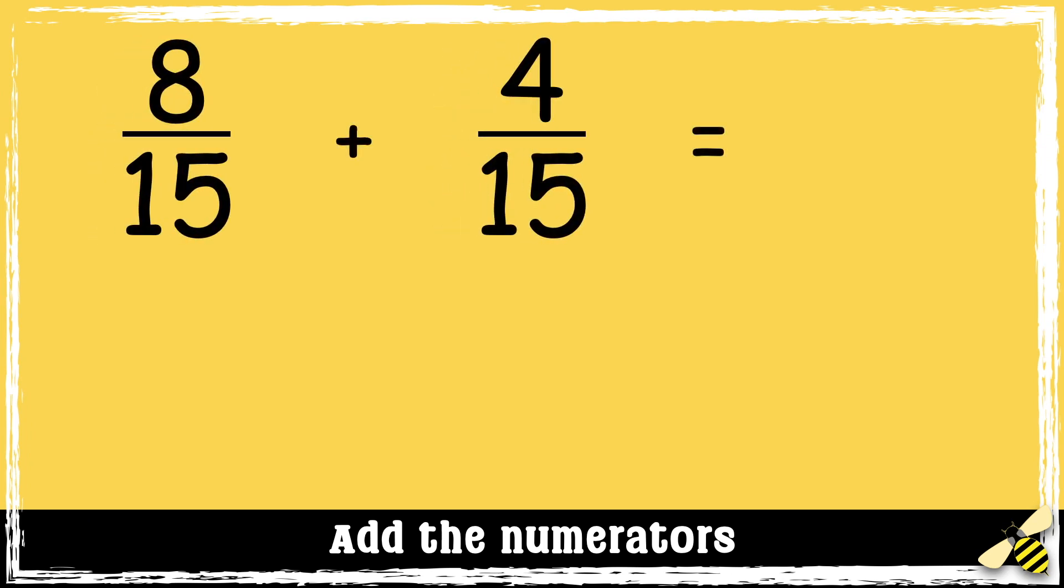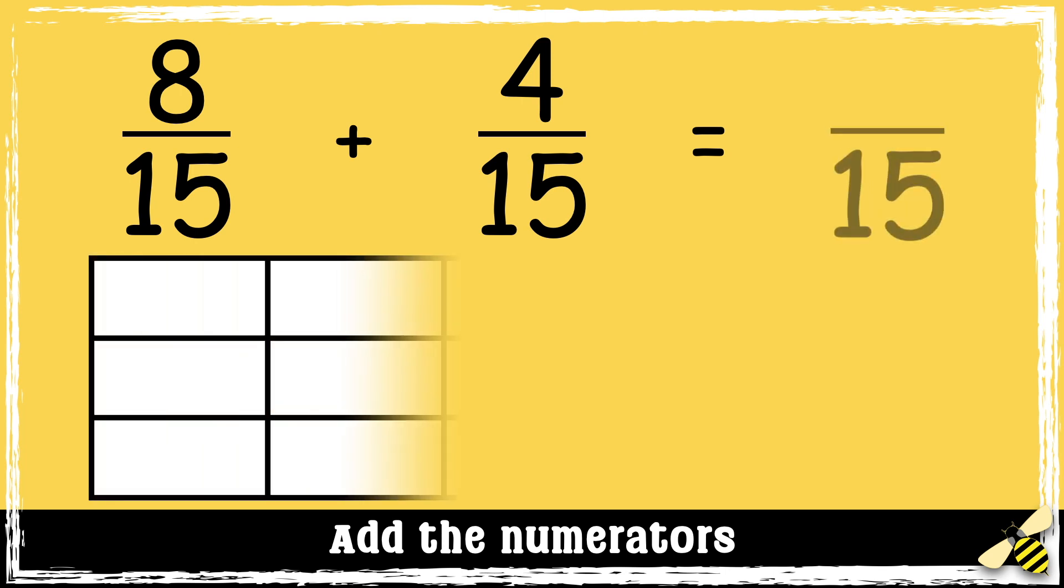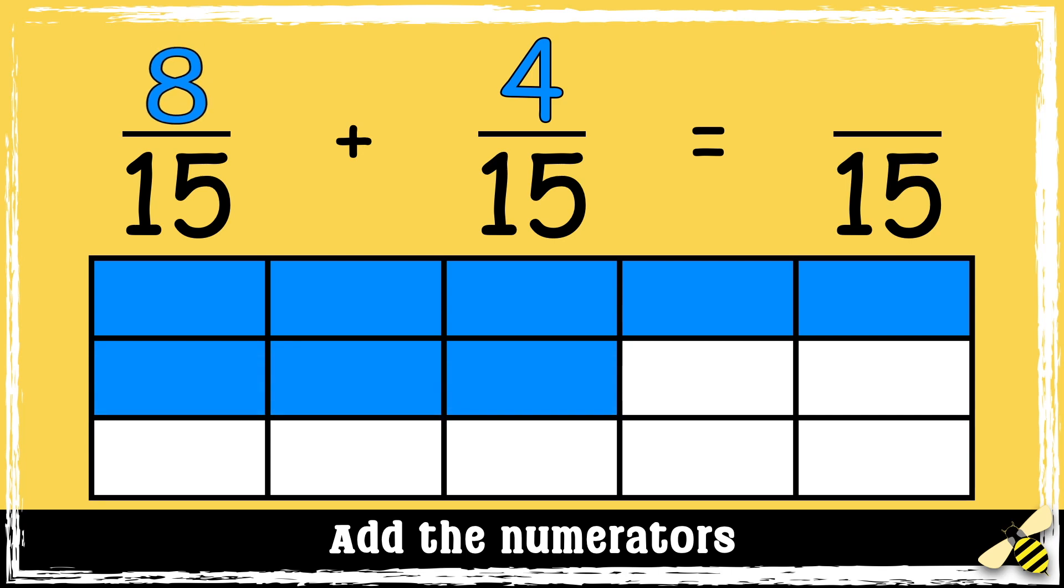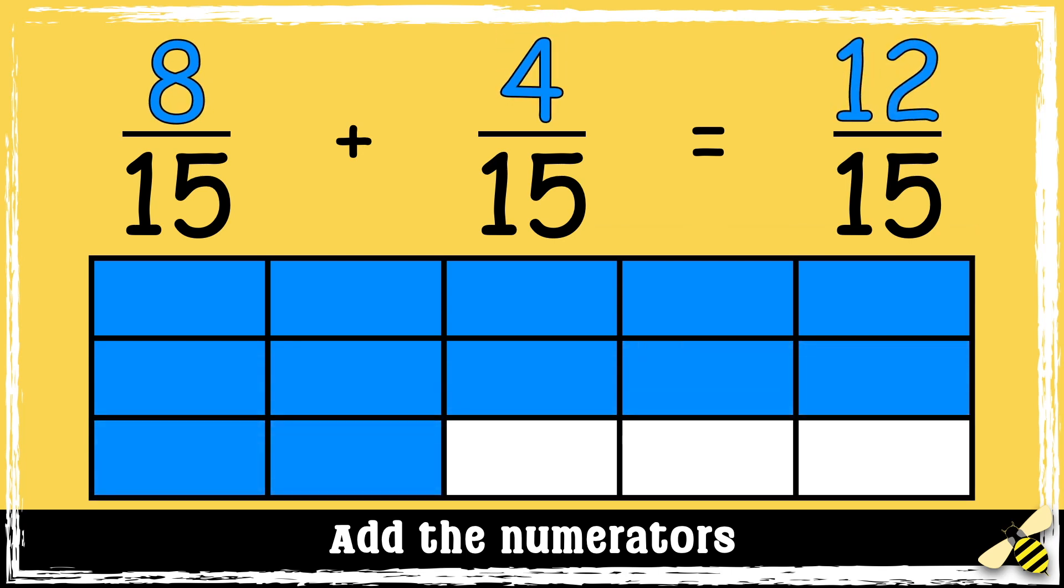Let's have a look at one more: 8 fifteenths add 4 fifteenths. Remember, the denominator stays the same. We only add the numerators. 8 add 4 equals 12, so the answer is 12 fifteenths.